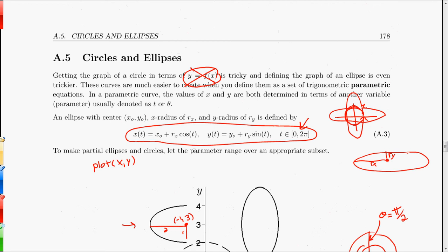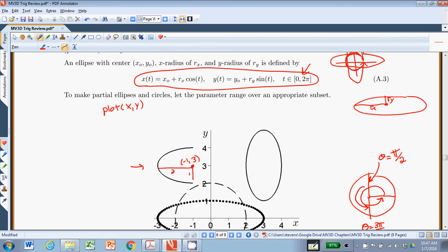So that wraps up ellipses and circles, and our next chapter, the final chapter before the assignment, is the tangent function. So we'll do that next. See you then. Bye.